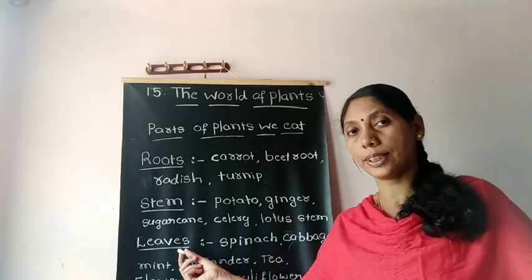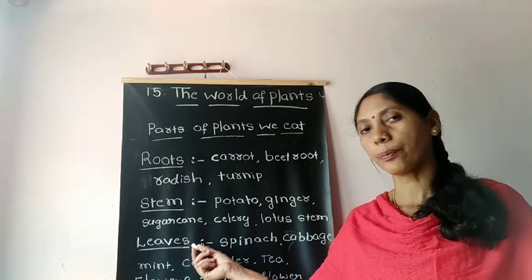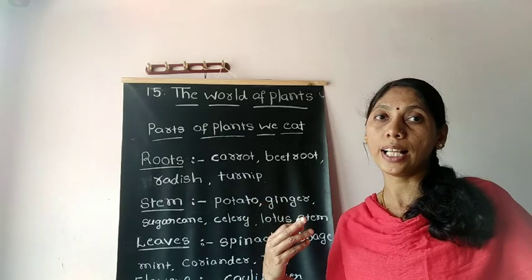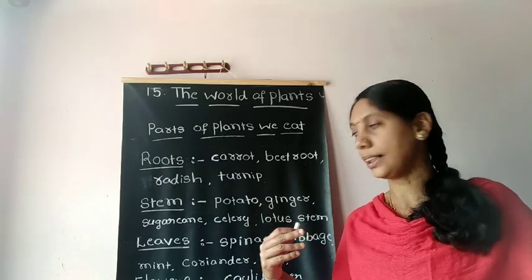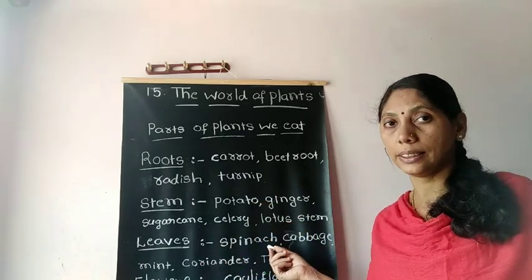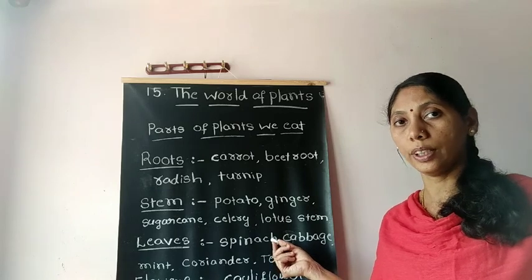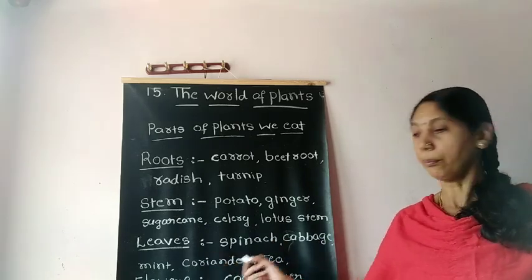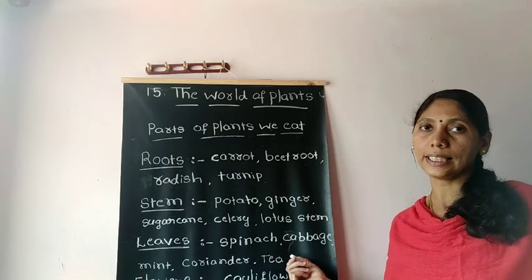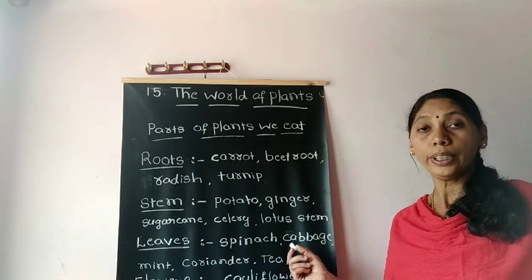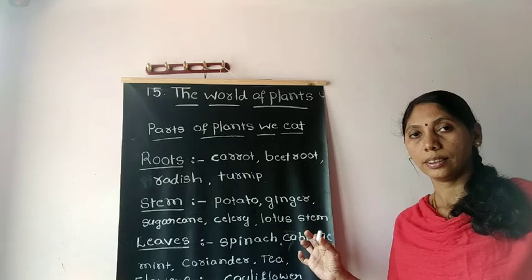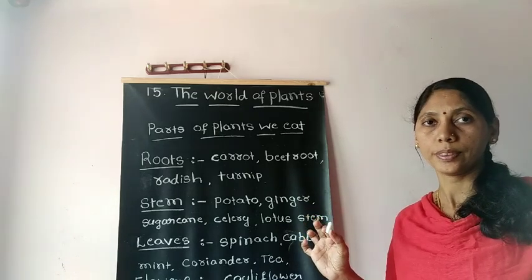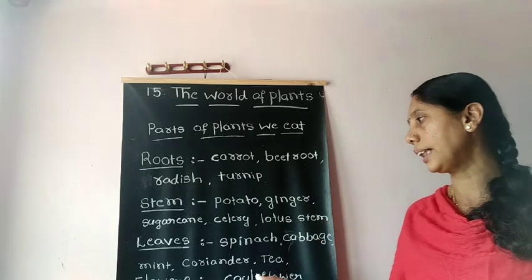Next, we go to leaves. So many leaves we use as our food. We use spinach, cabbage, coriander, mint, and tea. We drink tea, and tea powder comes from tea leaves.